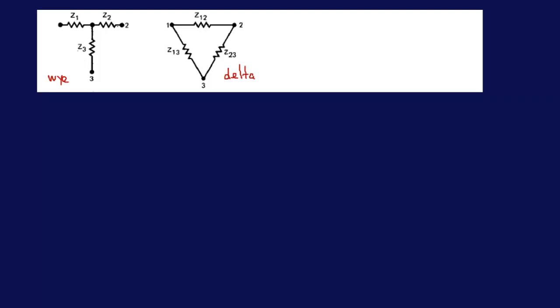So this is the way I've learned to actually derive it. This is Y and this is Delta, of course. Some people call this pi, some people call this T — but this is Delta and this is Y. That's how I learned it.